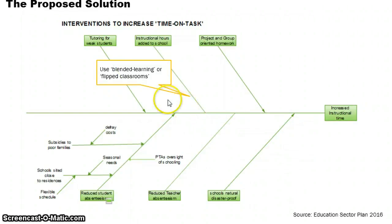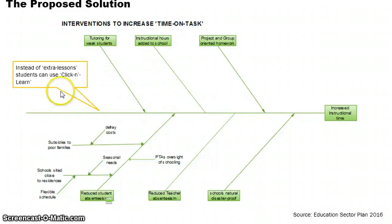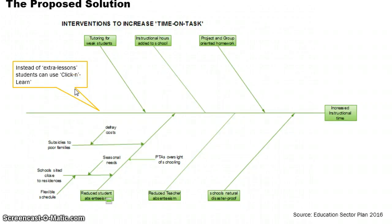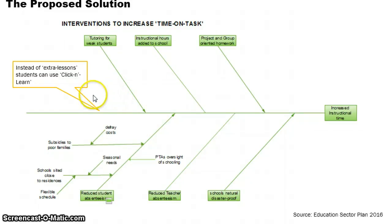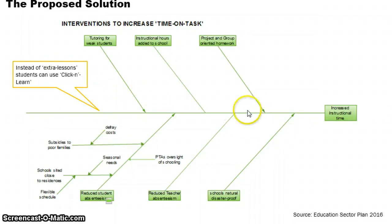One other suggestion is to use blended learning or flipped classrooms. Instead of extra lessons, students can use a software application called Click and Learn, which many consider to be the Rosetta Stone for mathematics. For those parents who have computers at home, you can invest in your child's education by getting the software. There's a free limited version you can download with no obligations, usable for both grade school and secondary school students.